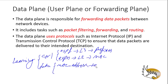For data plane learning, an example is the MAC address table. The MAC address table learns the MAC addresses of frames that it forwards — that is learned through the data plane. Other information can also be gathered through data plane learning. So we have control plane learning and data plane learning.